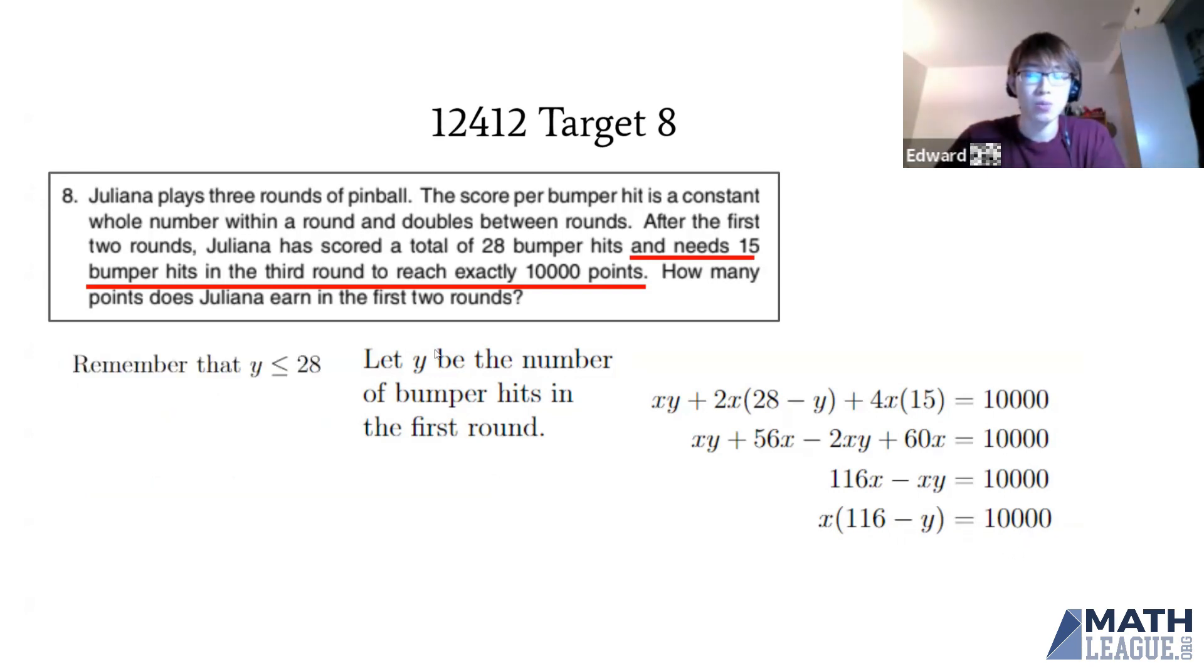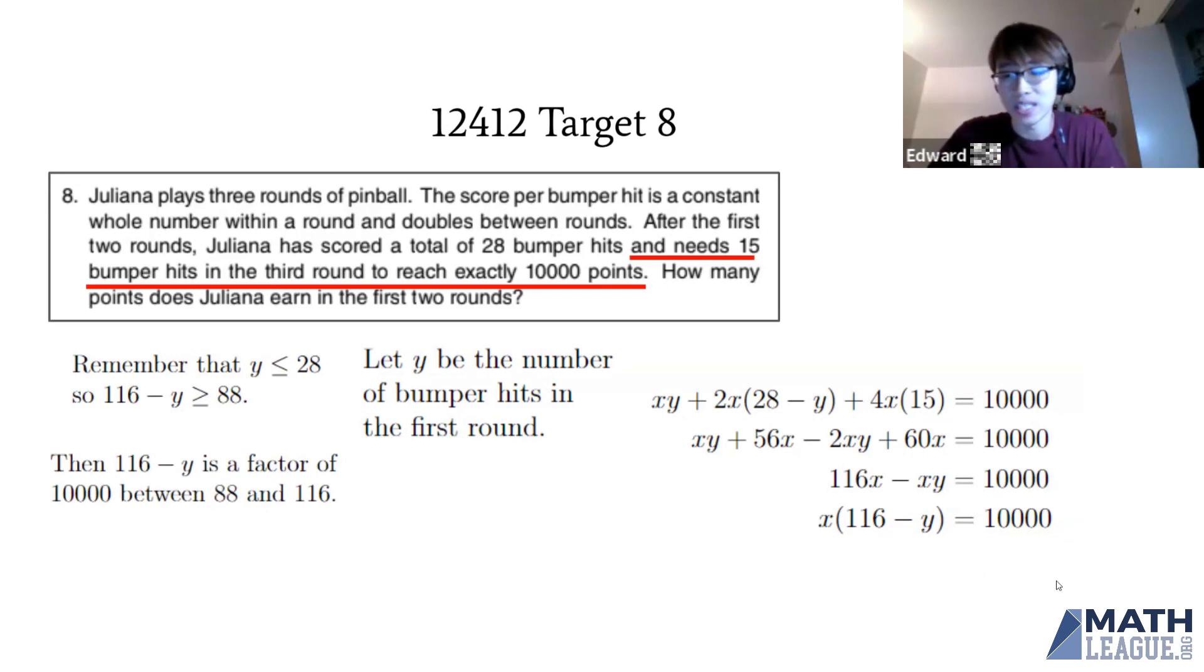Since Y is the number of bumper hits in the first round, Y is less than or equal to 28, which means 116 minus Y is greater than or equal to 88. So 116 minus Y is a factor of 10,000 between 88 and 116.